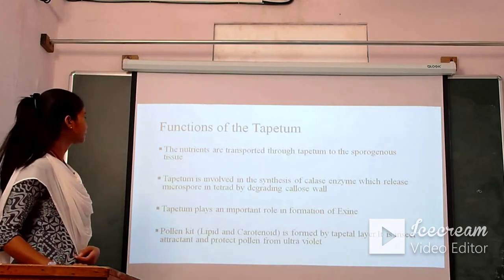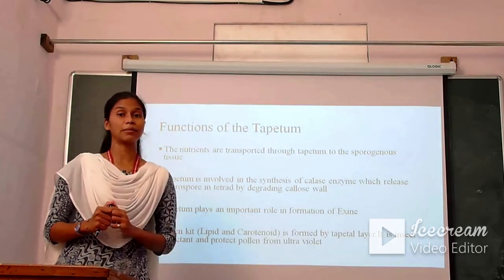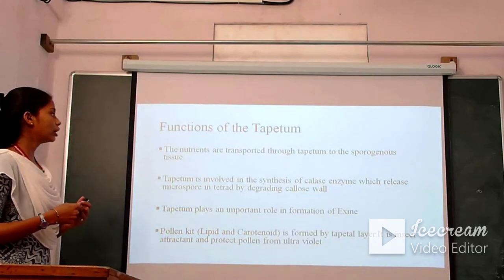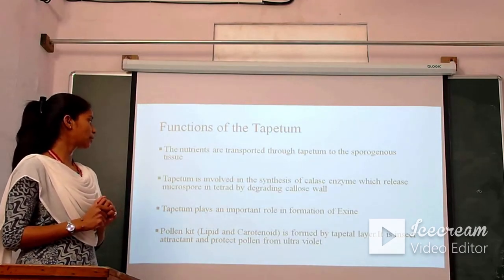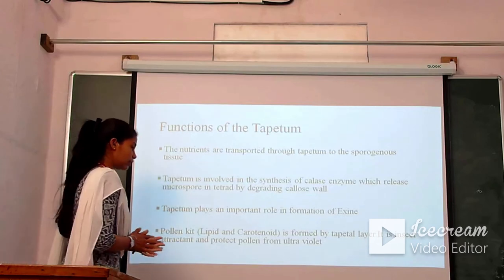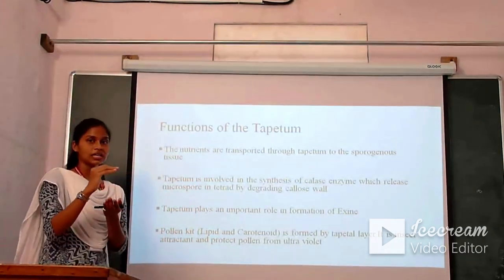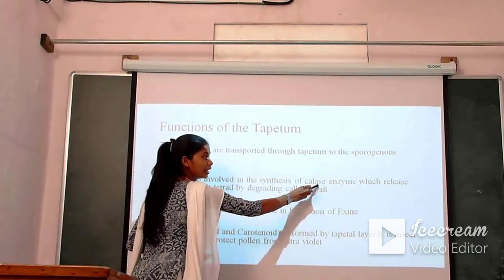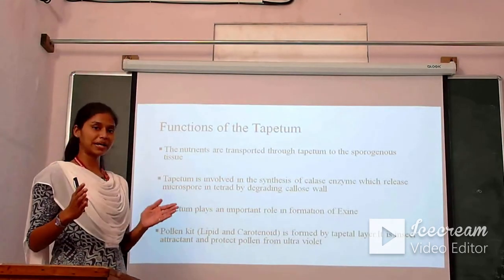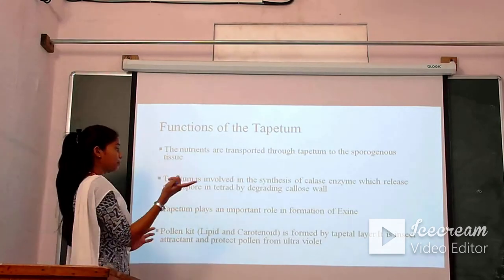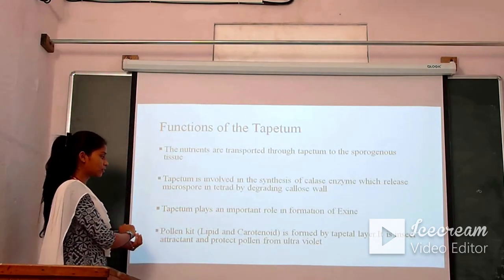What are the functions of tapetum? The primary function of tapetum is to transport nutrients to the sporogenous tissue and to provide nourishment to the developing pollen grains. Tapetum is also involved in the synthesis of callase enzyme, which releases microspores from the tetrad by degrading the callose wall. Four pollen grains are joined together by a substance called callose; that callose is degraded by callase enzyme, causing the four pollen grains to separate and be set free. Tapetum releases callase enzyme to degrade the callose wall of the pollen tetrad.